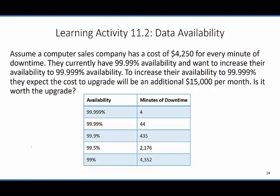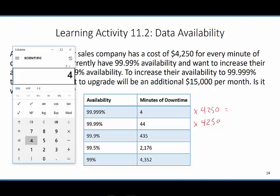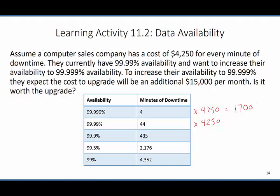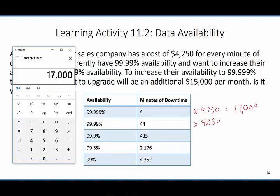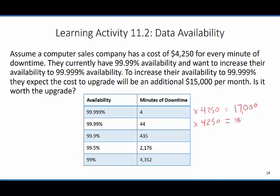Welcome back. What we're going to do is take the 4 minutes of downtime and multiply it by $4,250 for both the 99.99% and the 99.999% availability levels. Opening up the calculator: 4 times $4,250 gives us $17,000 — that's how much it will cost per year at 99.99% availability. Then 44 times $4,250 gives us $187,000 at the lower availability level. The cost to upgrade is 12 times $15,000, which equals $180,000.